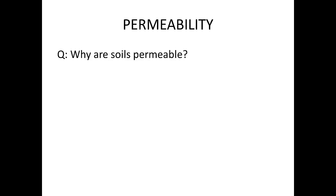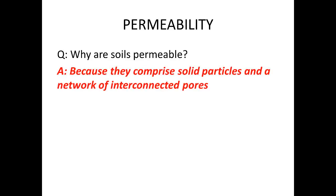So, why are soils permeable? How is it that water can actually flow through a soil? The answer is that it is possible for water to flow through a soil because soils not only comprise of the solid particles you can readily see, but also a network of interconnected pores within the solid particles — that is, the air space, the air gaps between the solid particles.